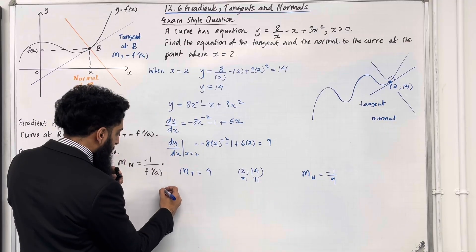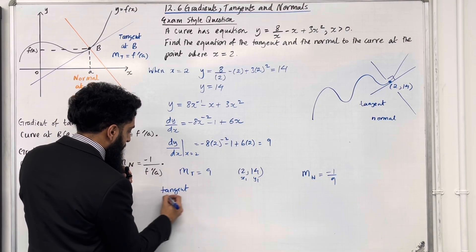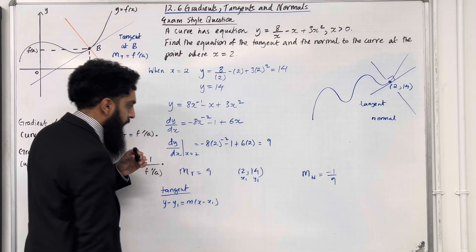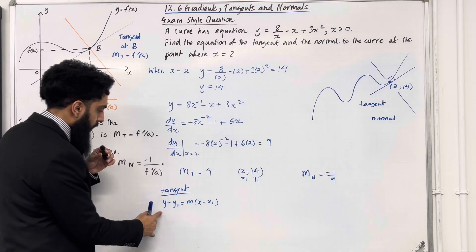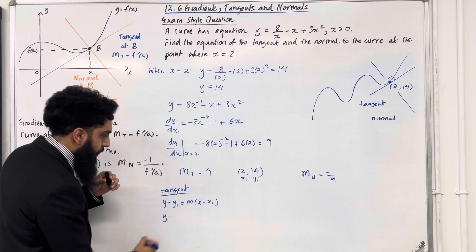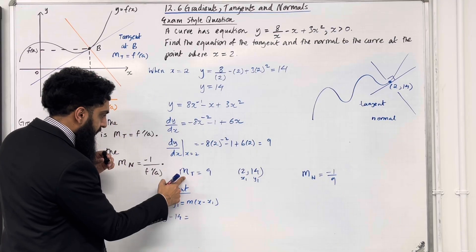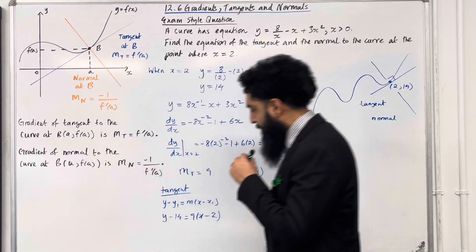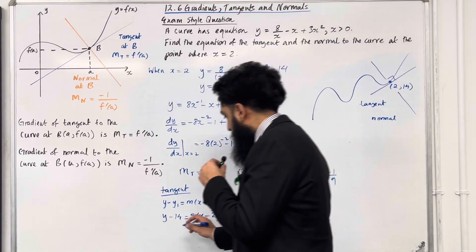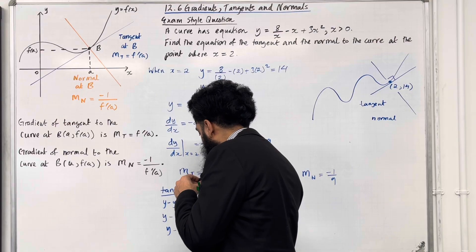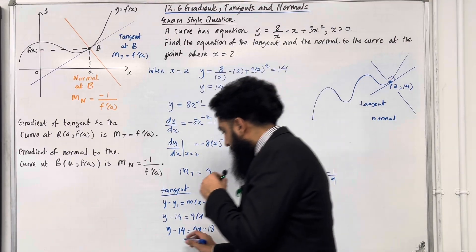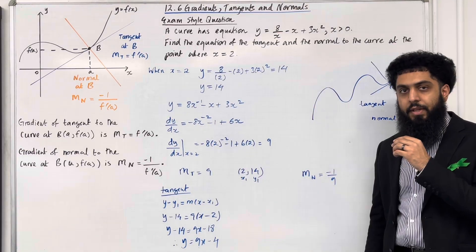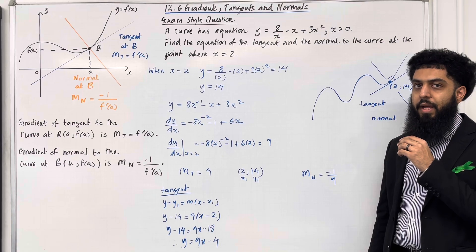We can proceed by finding the equation of the tangent using y minus y₁ equals m(x minus x₁). Substituting in: y minus 14 equals 9(x minus 2). Expanding the brackets: y minus 14 equals 9x minus 18. Hence, y equals 9x minus 4. That is the equation of the tangent to the curve at the point where x is equal to 2.